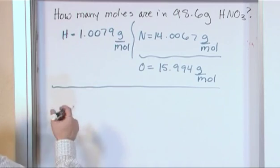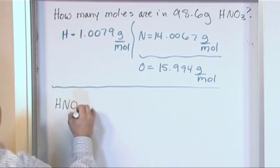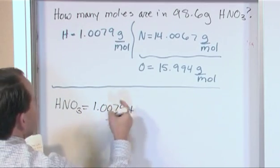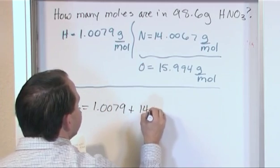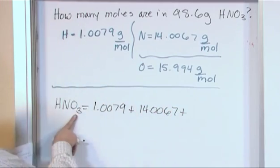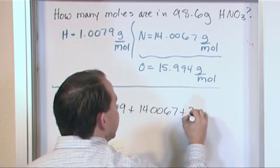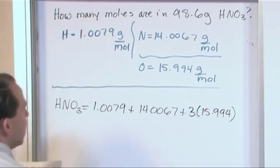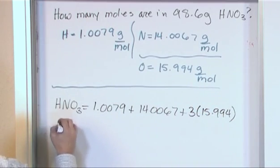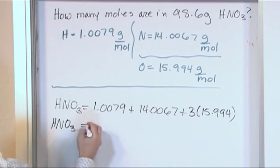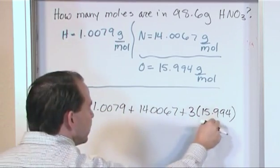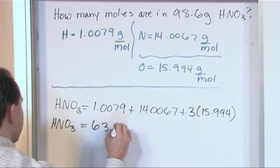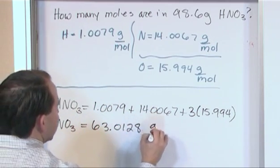So we have that there. So for HNO3, we just simply add them up. So plus the nitrogen, it's 14.0067, plus three atoms of oxygen. So we'll have three atoms of this, which is 15.994. And so what we have is HNO3. So we add this plus this, we have to do a little multiplication first and add that in. And what you get when you do that is 63.0128 and the unit is grams per mole.